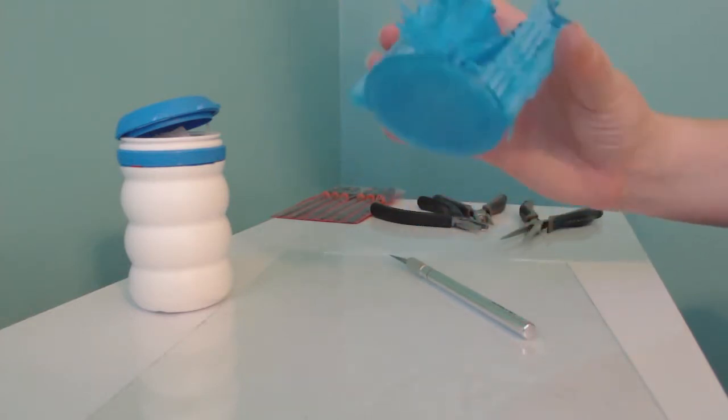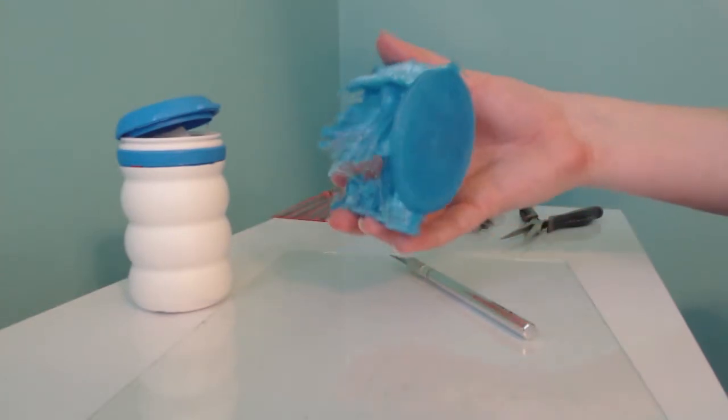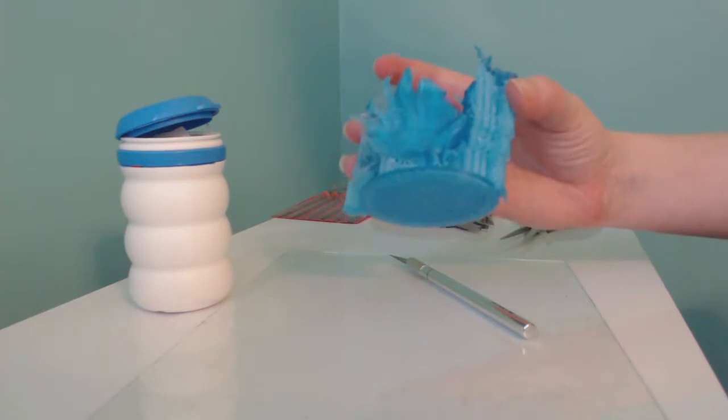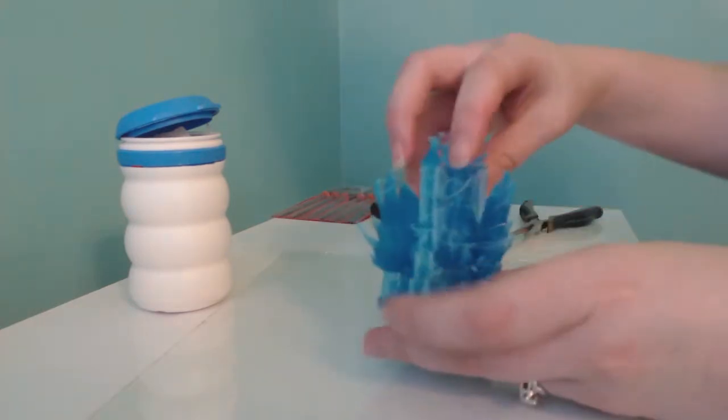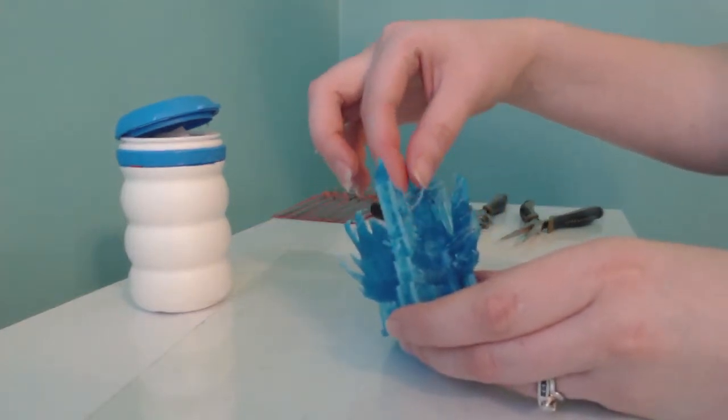So we'll go ahead and do this one and then I can also link in the description below the post for what to do after the removal of the scaffolding. As you can see, there's also a lot of webbing in here. That's probably because of some of my print settings.